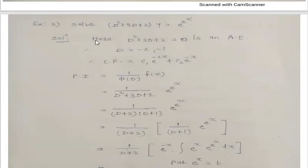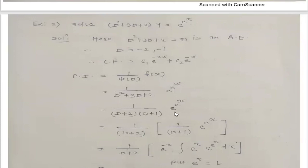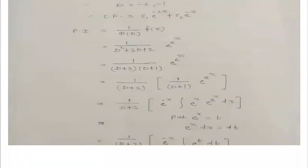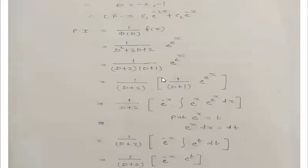The PI for f(x) = e^(e^x) uses the formula 1/φ(D) · f(x), where φ(D) = D² + 3D + 2 = (D+2)(D+1). We solve one factor at a time — first 1/(D+1), then 1/(D+2). Applying the third formula for 1/(D+1): e^(−x) · ∫e^x · e^(e^x) dx.